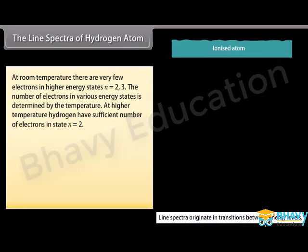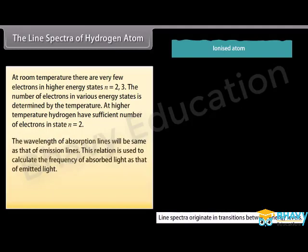At room temperature, there are very few electrons in higher energy states such as n = 2 and n = 3. The number of electrons in various energy states is determined by the temperature. At higher temperatures, hydrogen has sufficient electrons in the state n = 2. The wavelength of absorption lines will be the same as that of emission lines. This relation is used to calculate the frequency of absorbed light: E₂ − E₁ = hν₁₂ = hc/λ₁₂.